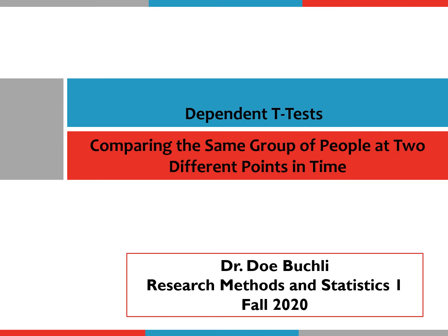With an independent t-test, we are comparing two different groups of people on some continuous variable at the same point in time. So we might have 20 males and 20 females take a personality inventory at the same time to determine whether they are introverts or extroverts. But with a dependent samples t-test, instead of comparing two different groups of people at the same point in time, we are comparing the same group of people at two different points in time.